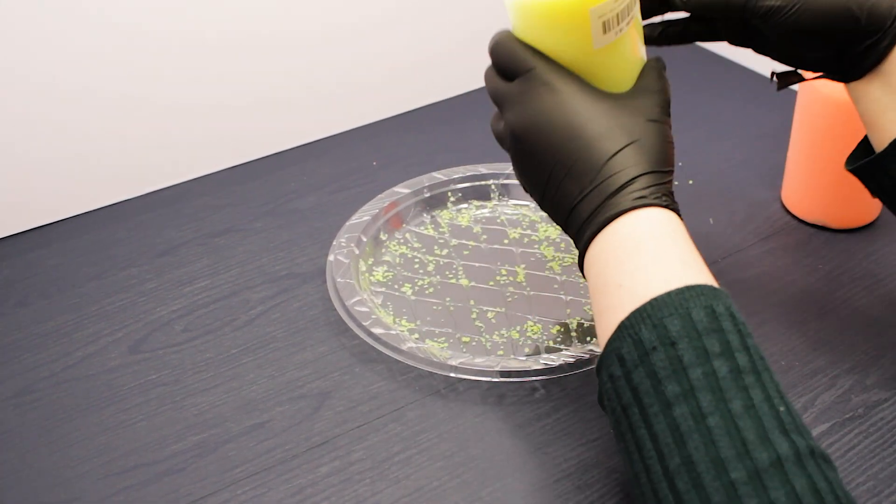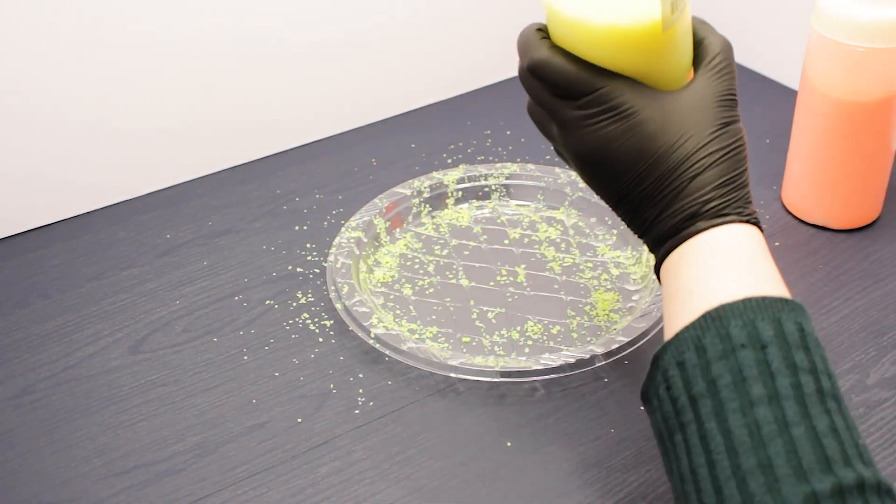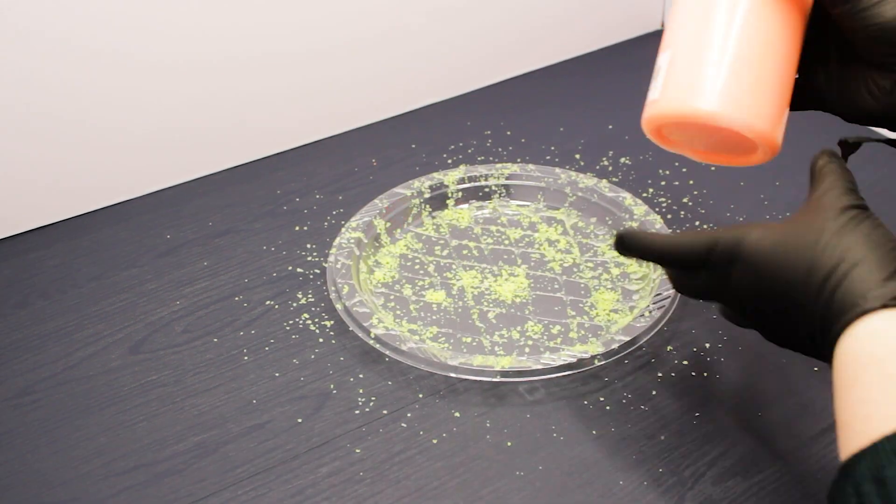Sprinkle colored sand across the glue until no glue is left exposed. Shake off the excess sand then allow the glue to dry.